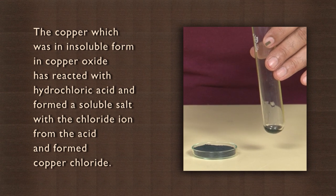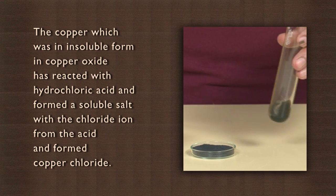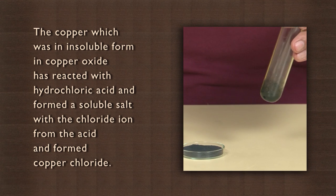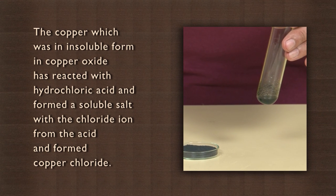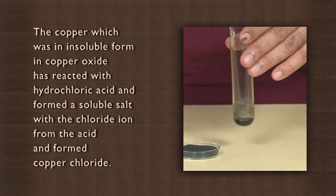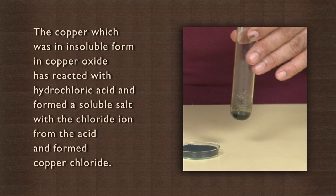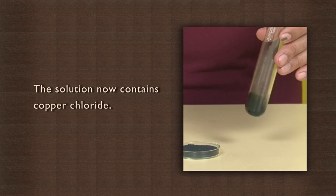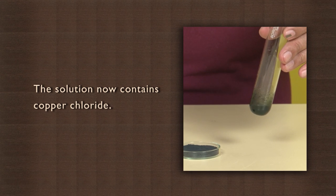The copper which was in insoluble form in copper oxide has reacted with hydrochloric acid and formed a soluble salt with the chloride ion from the acid, forming copper chloride. The solution now contains copper chloride.